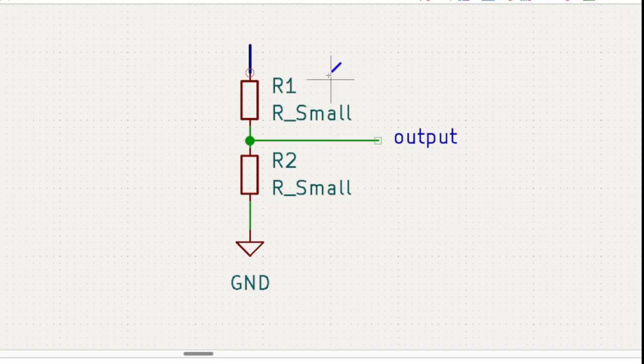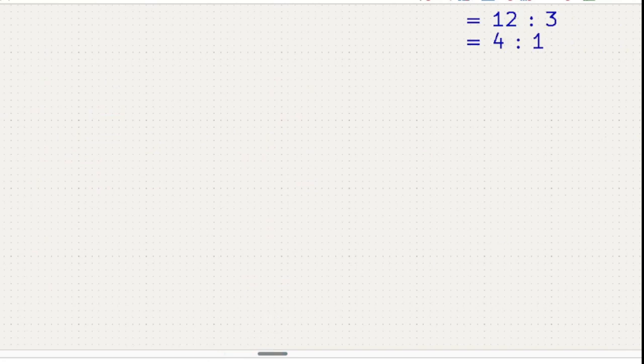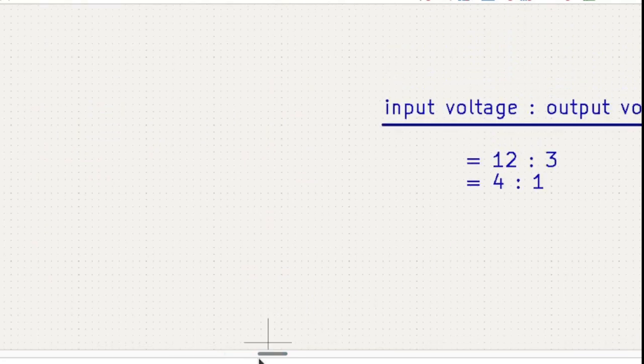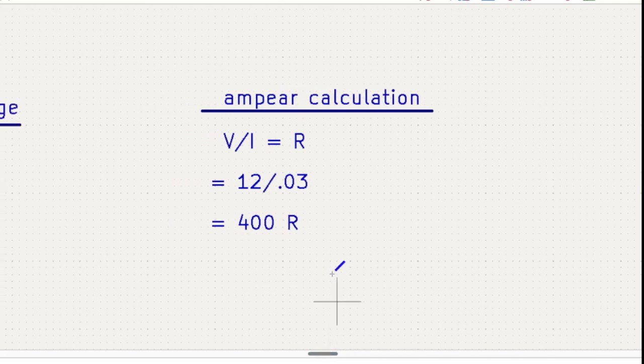So we have to calculate this value for this device. How can we calculate this value? Ampere calculation - first we have to calculate the ampere. In the datasheet we follow the ampere is 50 milliamps.